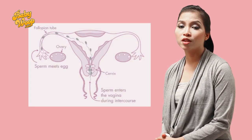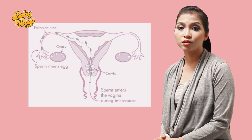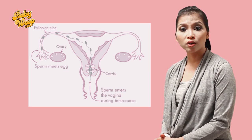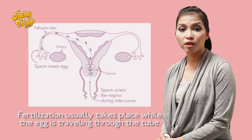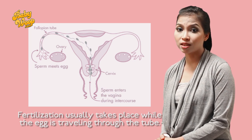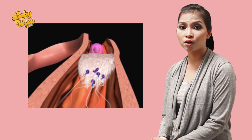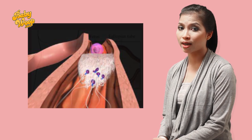So how do blocked Fallopian tubes cause infertility? Each month when ovulation occurs, an egg is released from one of the ovaries. The egg travels from the ovary through the tubes into the uterus. The sperm also need to swim their way through the uterus and through the Fallopian tubes to reach the egg. Fertilization usually takes place while the egg is traveling through the tube. If one or both Fallopian tubes are blocked, the egg cannot reach the uterus, and the sperm cannot reach the egg, preventing fertilization and pregnancy.